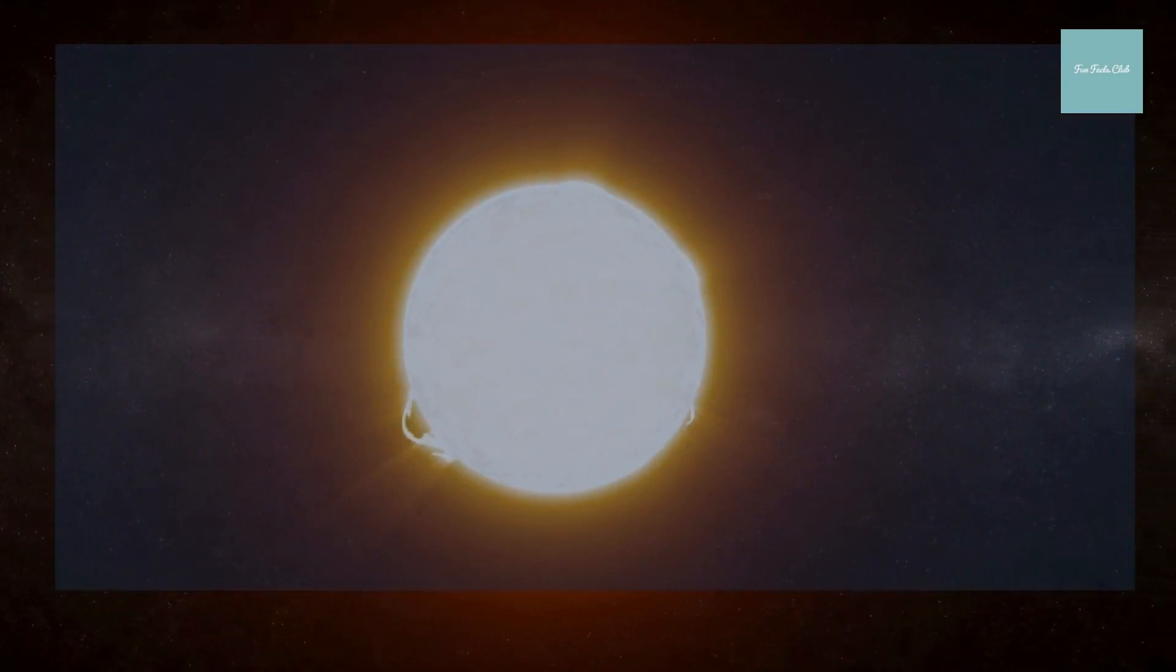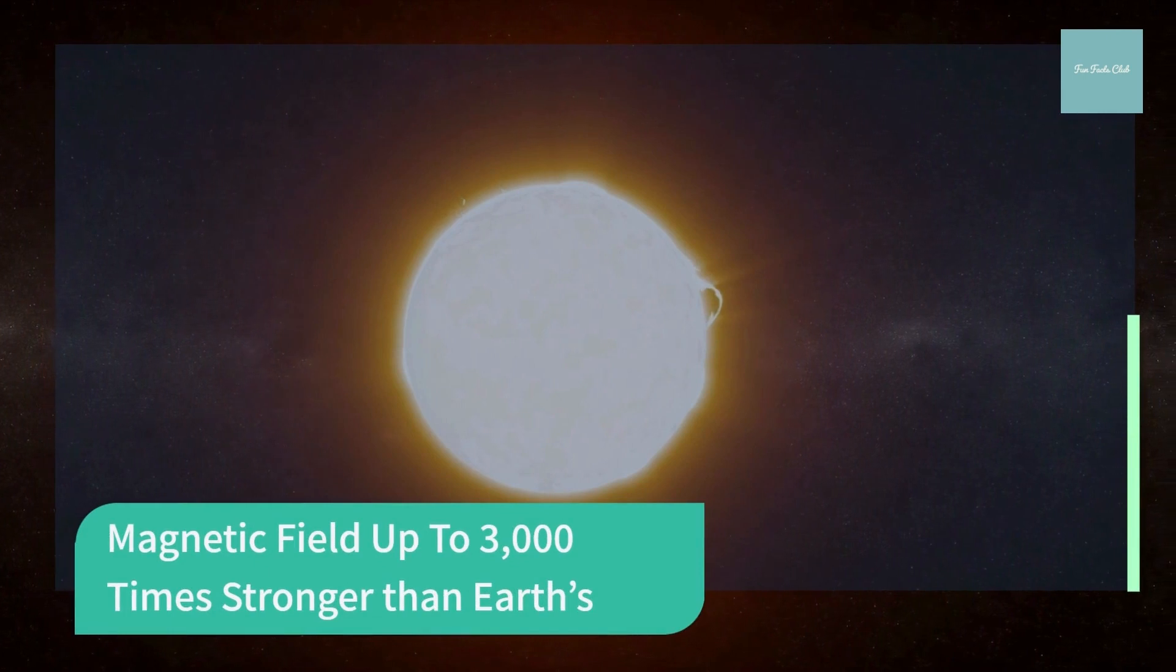Although the Sun's magnetic field is only about twice as strong as Earth's overall, the differential rotation of the Sun concentrates the field in some places where it can be as much as 3,000 times as strong as on Earth. Magnetic concentrations manifest as sunspots and only occur up to about 45 degrees north and south of the solar equator, because it is in this region that the differences in the rotation rates of different parts of the Sun is greatest.